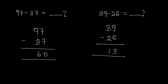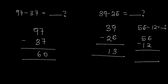Let's have a look at one final example: say we have 56 minus 12. If I subtract 2 from 6 I get 4, and if I subtract 1 from 5 I get 4, so the answer is 44.